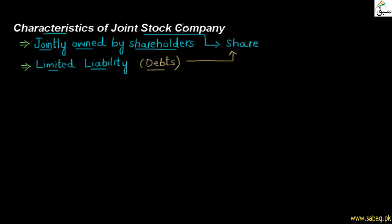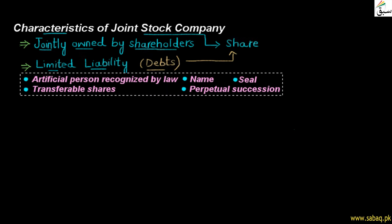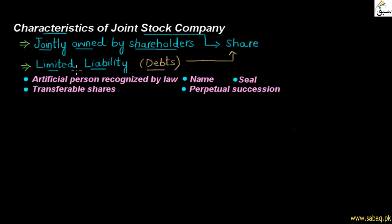We call the joint stock company — the definition of law, we will see it after this. A joint stock company is like an artificial person, and that person is recognized by law. The law gives recognition to this person. It will have a name and a stamp — a common seal — because a common person has a signature but the company cannot sign, so a common seal, which is a stamp, will be placed on paper on behalf of the company.